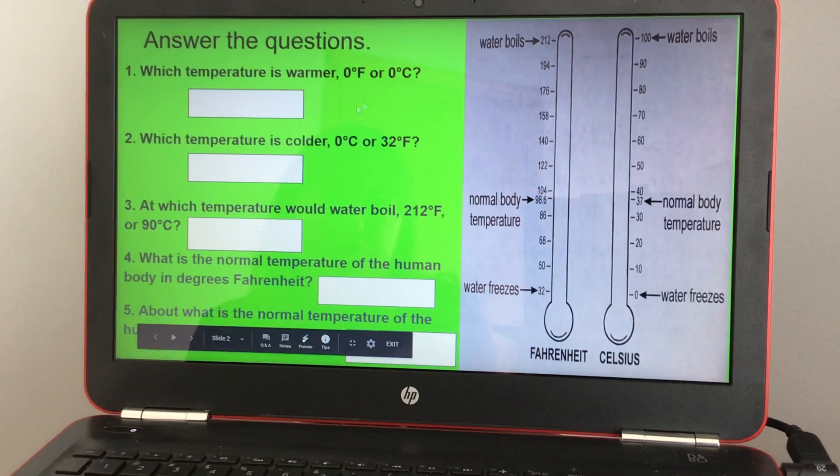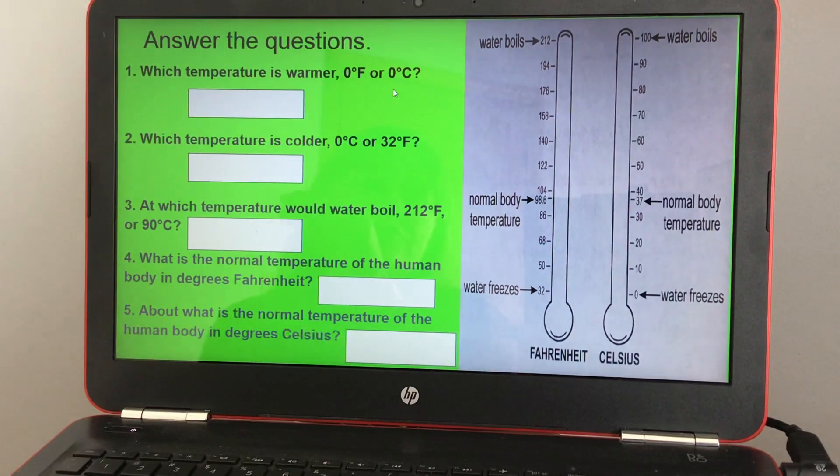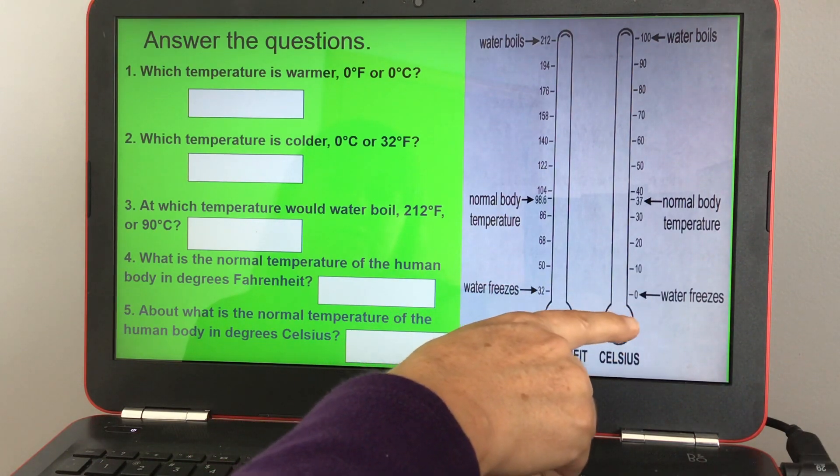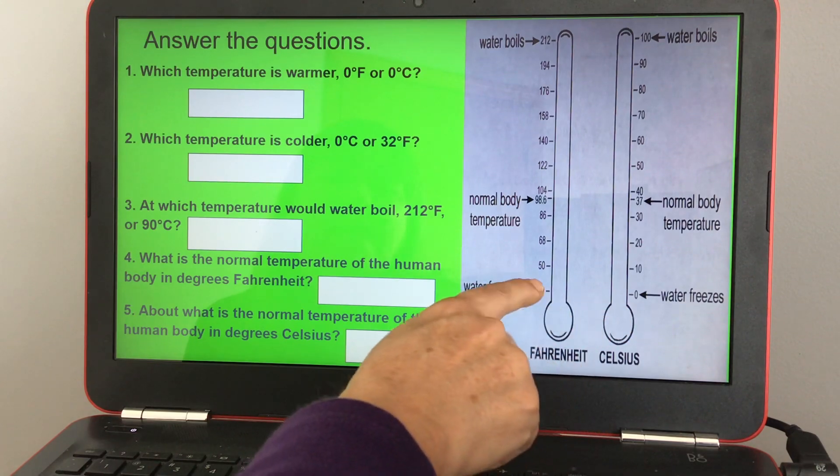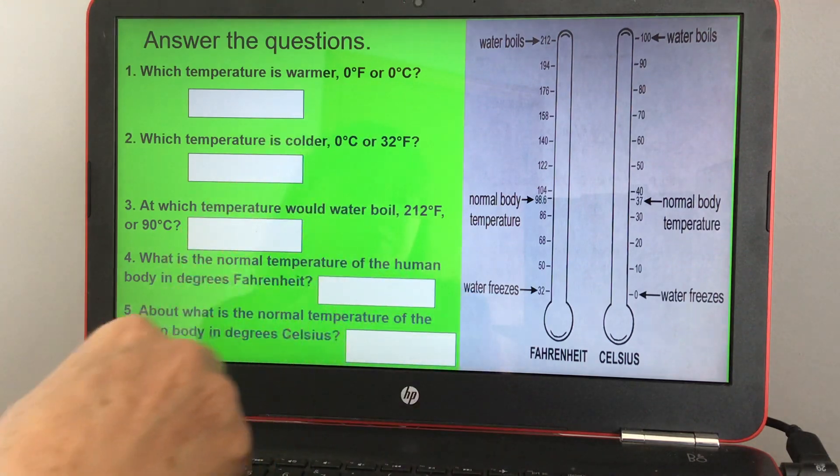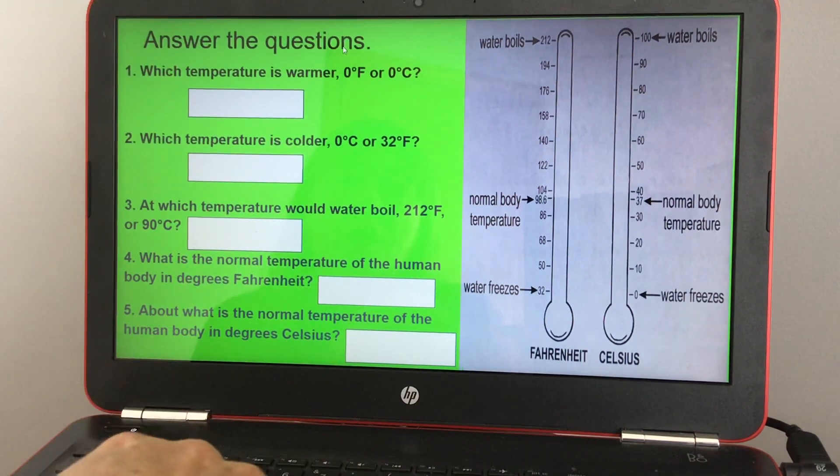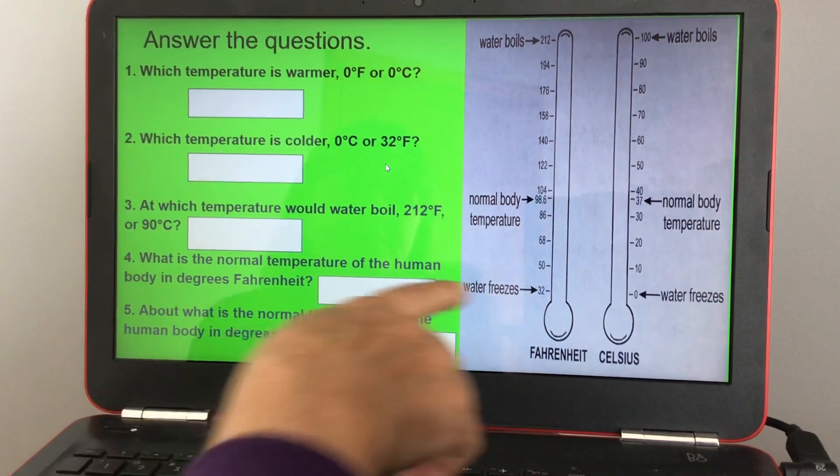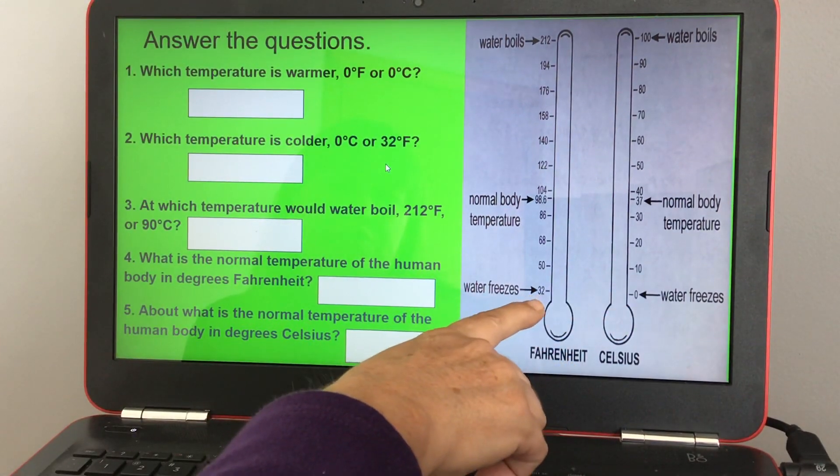Okay, so which temperature is warmer, zero degrees Fahrenheit or zero degrees Celsius? So if water freezes at 32 degrees Fahrenheit and water freezes at zero degrees Celsius, and if you go down 32 more degrees, it's going to be colder.